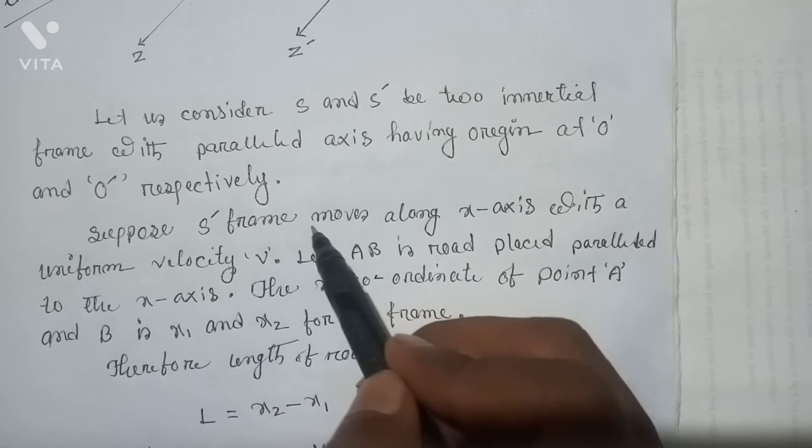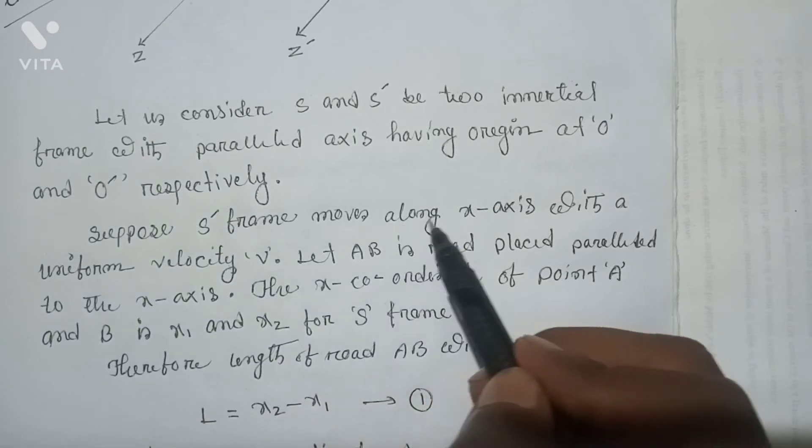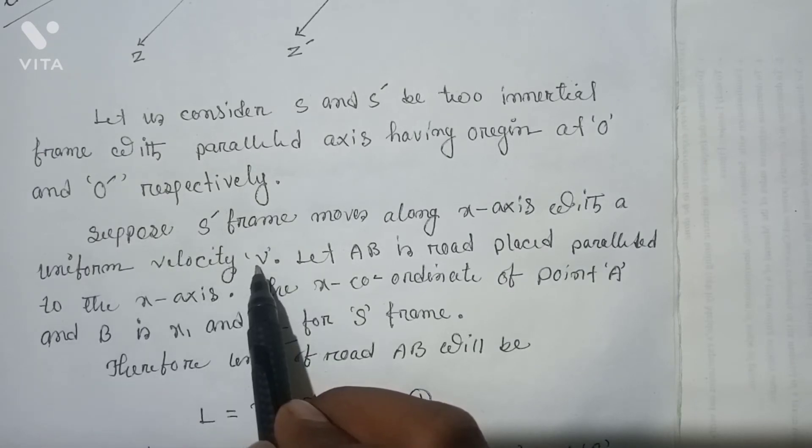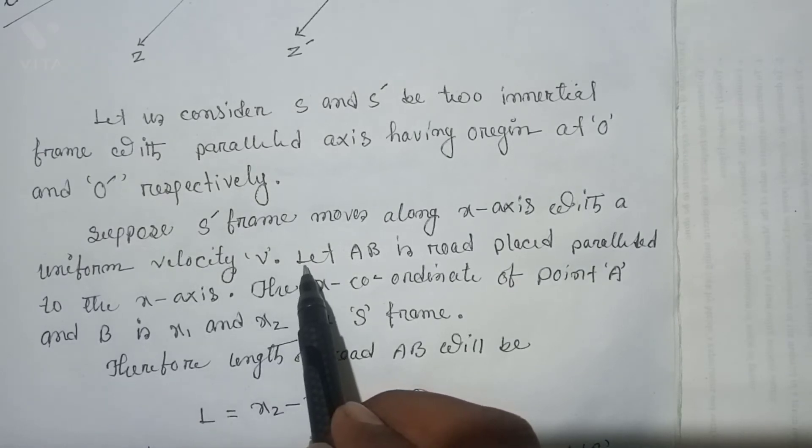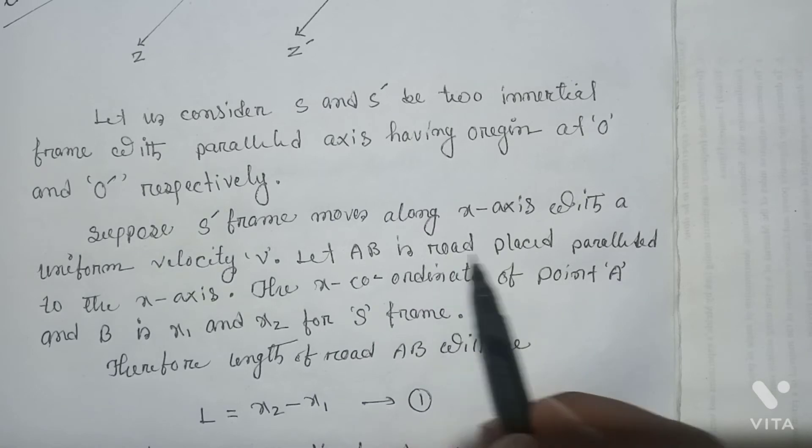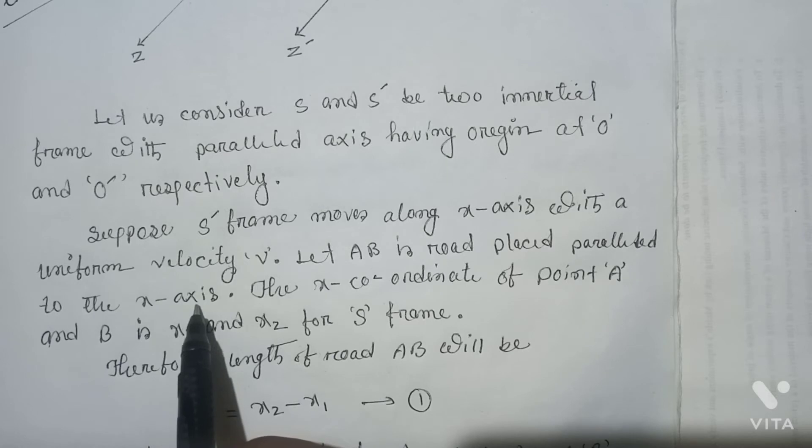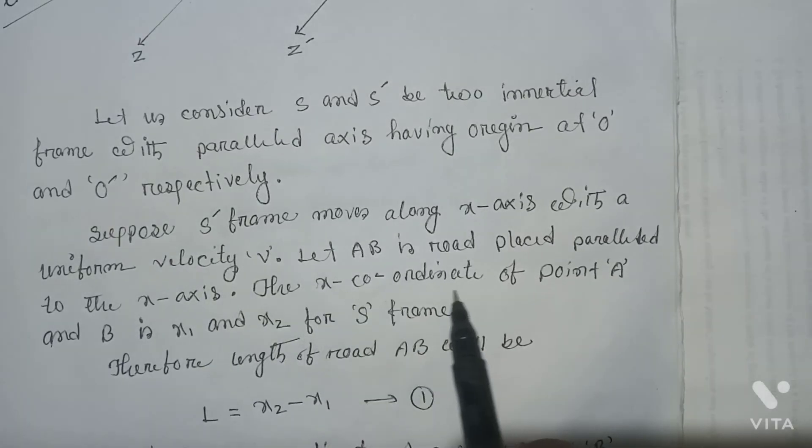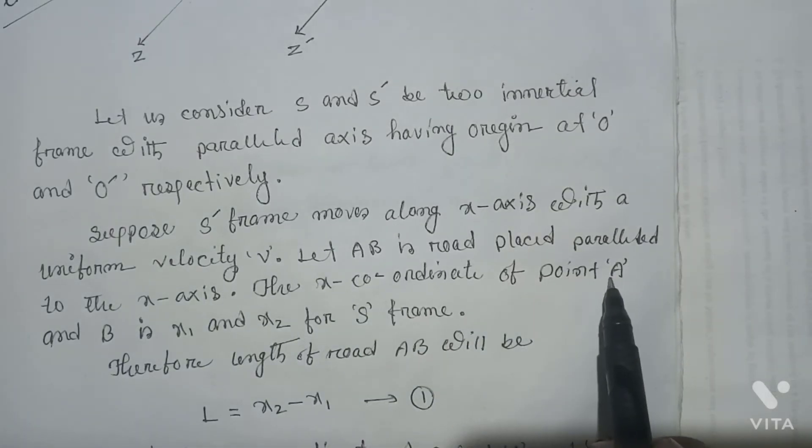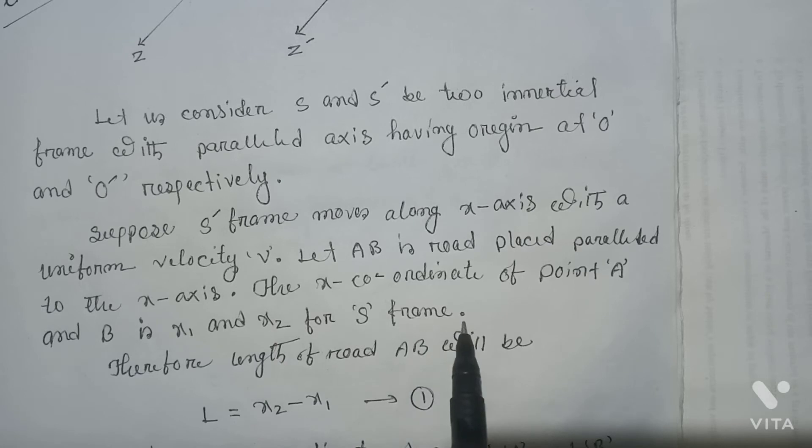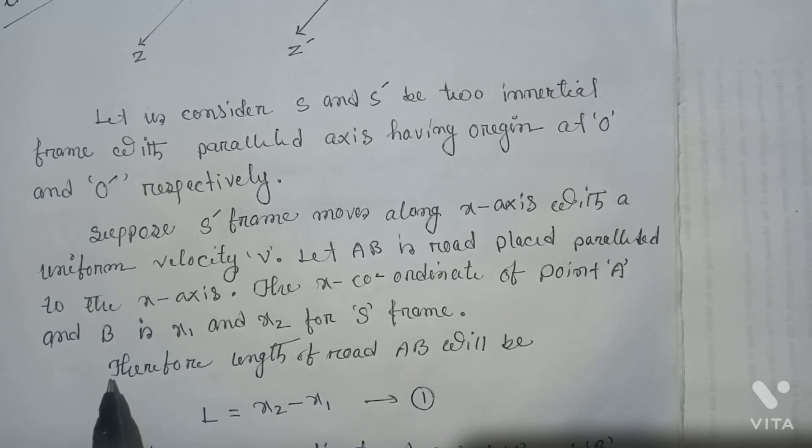Suppose S' frame moves along x-axis with uniform velocity V. Let AB be a rod placed parallel to the x-axis. The x-coordinates of points A and B are x₁ and x₂ for S frame. Therefore, length of rod AB will be L = x₂ - x₁, which is equation 1.